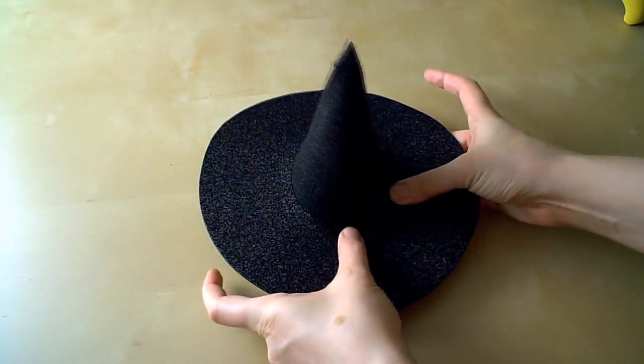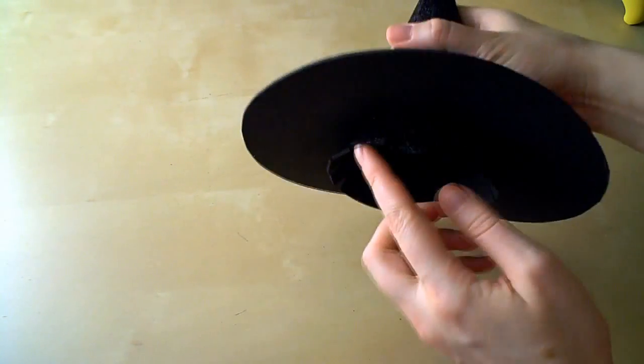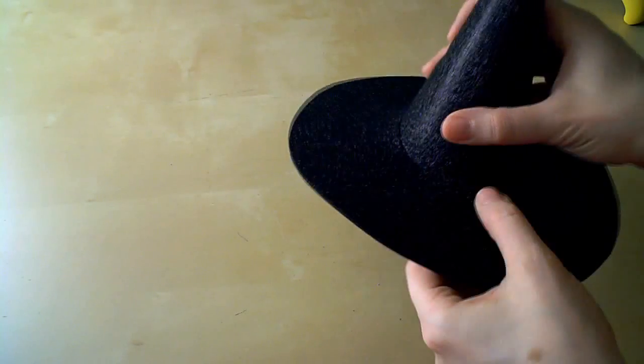Take the brim of the hat and slip it over the cone. You want to ease it down until it's just above the level of the clips we just made on the bottom edge of the cone.